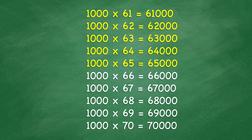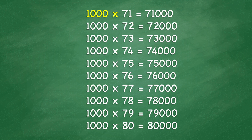1,000 x 65 equals 65,000. 1,000 x 66 equals 66,000. 1,000 x 67 equals 67,000. 1,000 x 68 equals 68,000. 1,000 x 69 equals 69,000. 1,000 x 70 equals 70,000. 1,000 x 71 equals 71,000. 1,000 x 72 equals 72,000.